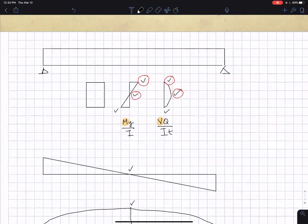If you take any point in the beam, let's just pick an arbitrary point, that point will have some stress due to moment, a normal stress, and some shear stress.